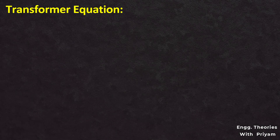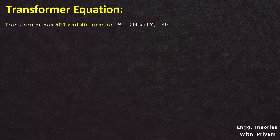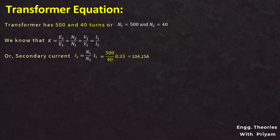The transformer has N1 = 500 turns in the primary and N2 = 40 turns in the secondary. According to the transformer equation, the voltage transformation ratio k equals E2 by E1 equals N2 by N1 equals V2 by V1 equals I1 by I2. Using the equation I1 by I2 equals N2 by N1, the secondary current I2 equals N1 by N2 into I1, which is 500 by 40 into 8.33 ampere, giving I2 equal to 104.15 ampere.